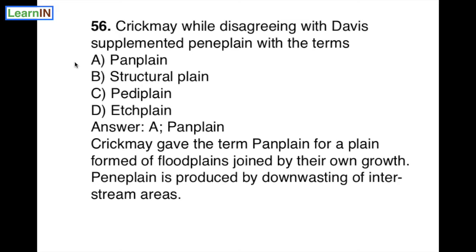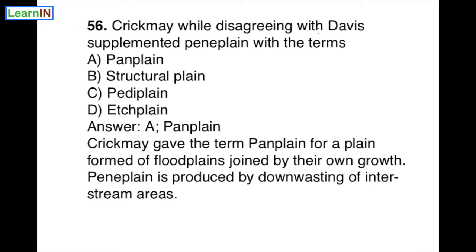Question 56: Crick may disagreed with Davis and supplemented the term 'penny plane' with his own term. The correct option is A — pan plane. This question has been discussed in a previous module, so this is a revision. Crick may replaced the word 'penny plane' given by Davis with 'pan plane' — a plane formed by floodplains joined by their own growth. Penny plane is produced by down-wasting of inter-stream areas.